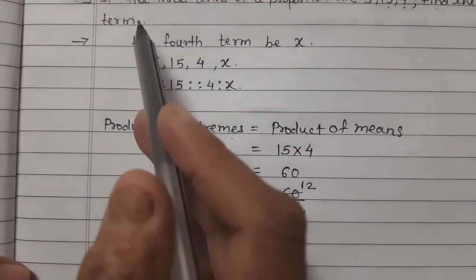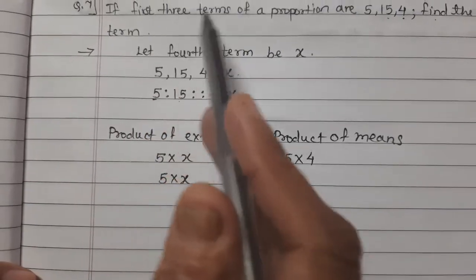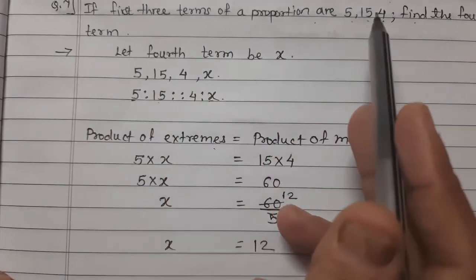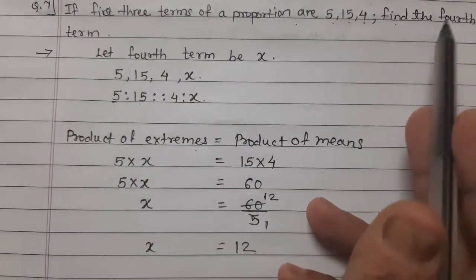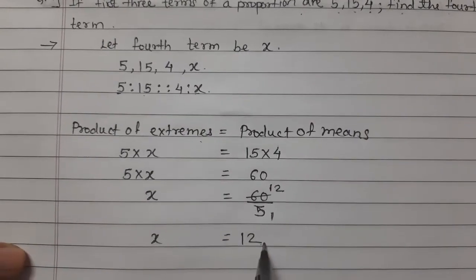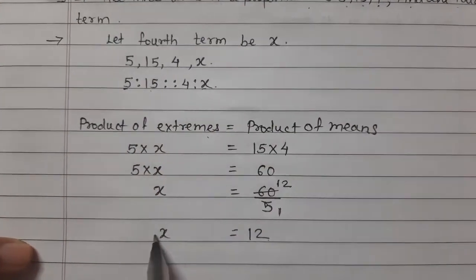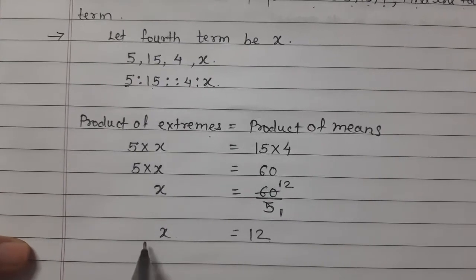So the 4th term: if the first 3 terms of the proportion are 5, 15, 4 — find the 4th term. The 4th term is 12.